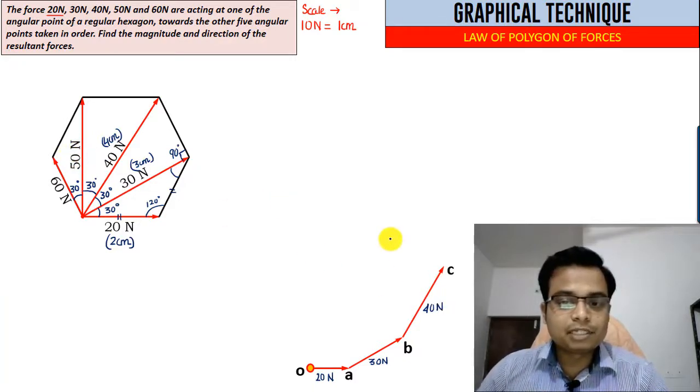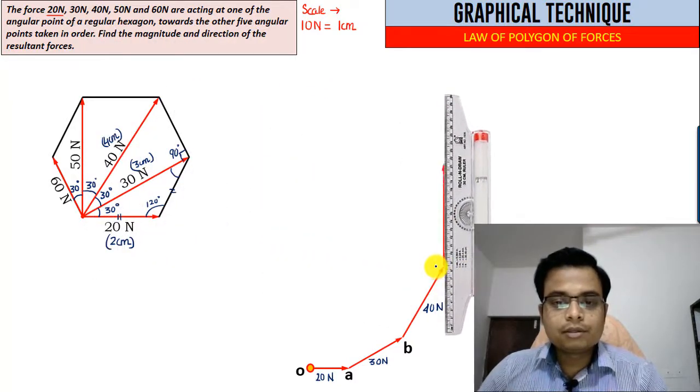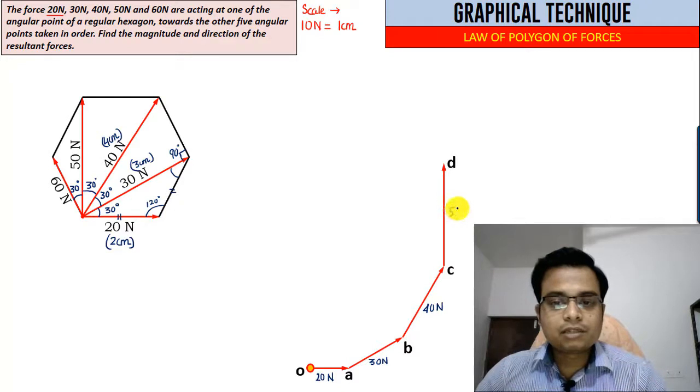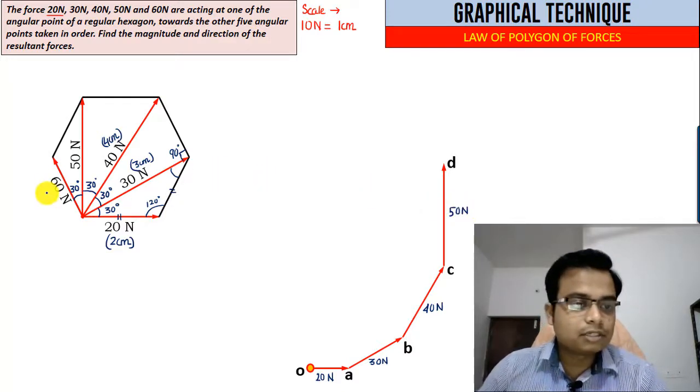This is going to be 50 Newtons. Do we have any other force? This one is still left. Corresponding to the 60 Newton, you have to draw a line of 6 centimeters. Make sure it is absolutely parallel to this force, the 60 Newton force.